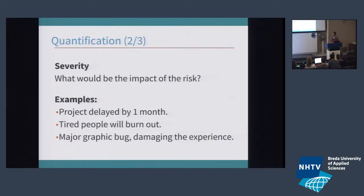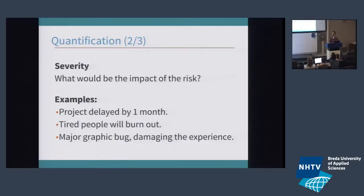The second is severity — what would be the impact of the risk? Will it delay the project? Will it have a big influence on people? Is it something that happens in a part of the game, or is it one of the core systems that makes your game utterly unplayable? You could have several layers of severity to objectify these risks. Often, it's quite difficult to put a risk into a quantification of severity by itself, but if you compare them to other risks, you can say it's more severe than this one. It's often through comparison.